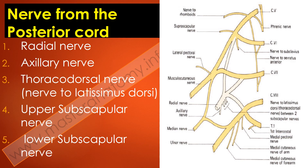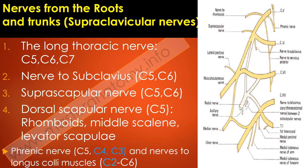The posterior cord gives rise to five nerves: the radial nerve, the axillary nerve, the thoracodorsal nerve that supplies the latissimus dorsi, and the upper and lower subscapular nerves that supply the subscapularis. Among the supraclavicular nerves, we have the long thoracic nerve, which emanates from C5 to C7 and supplies the serratus anterior muscle.